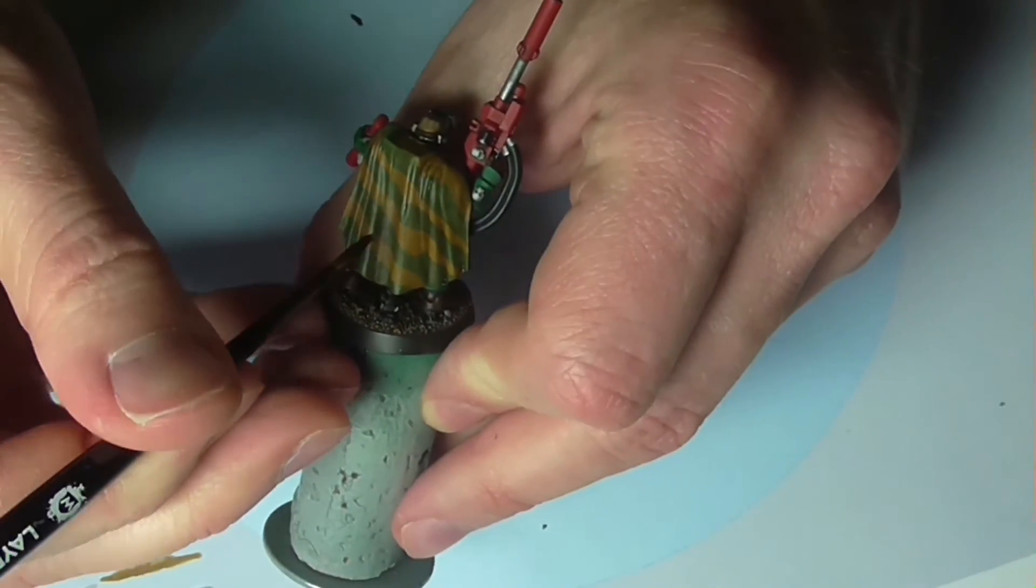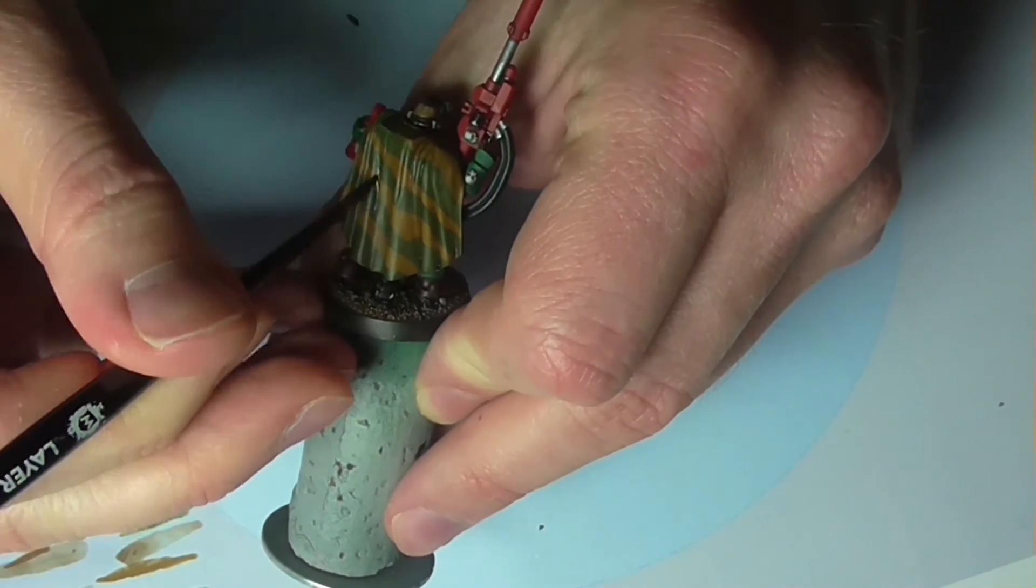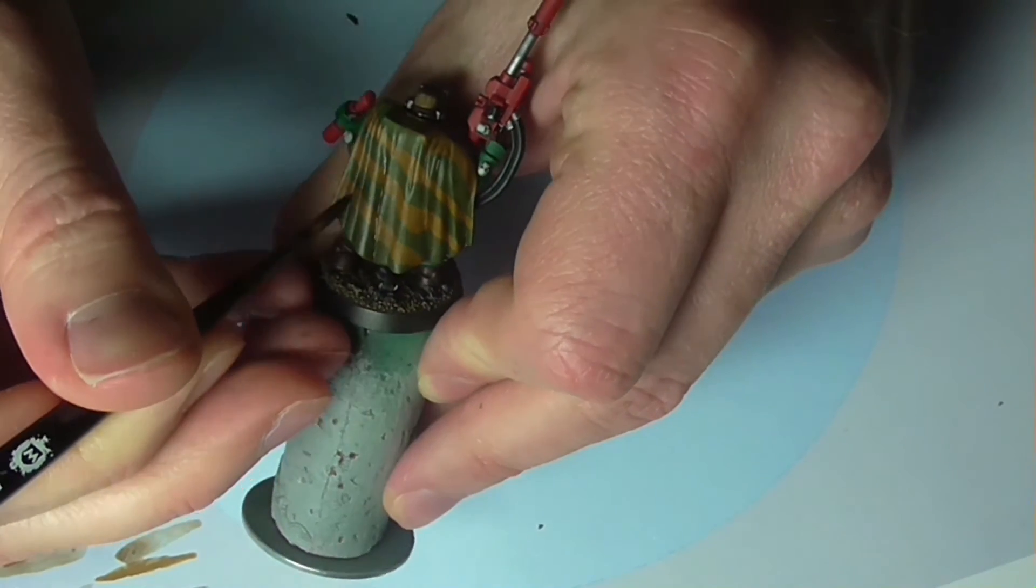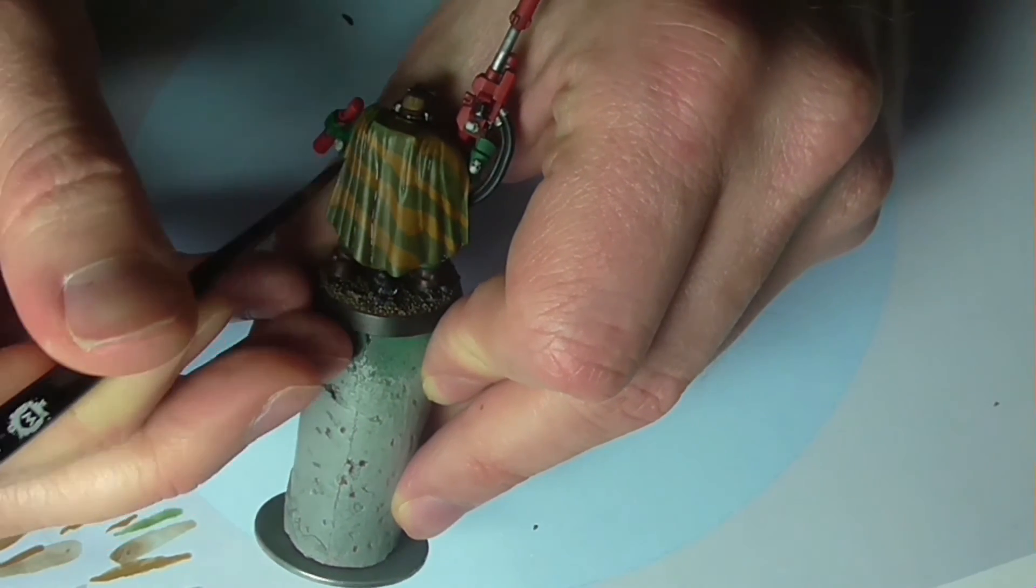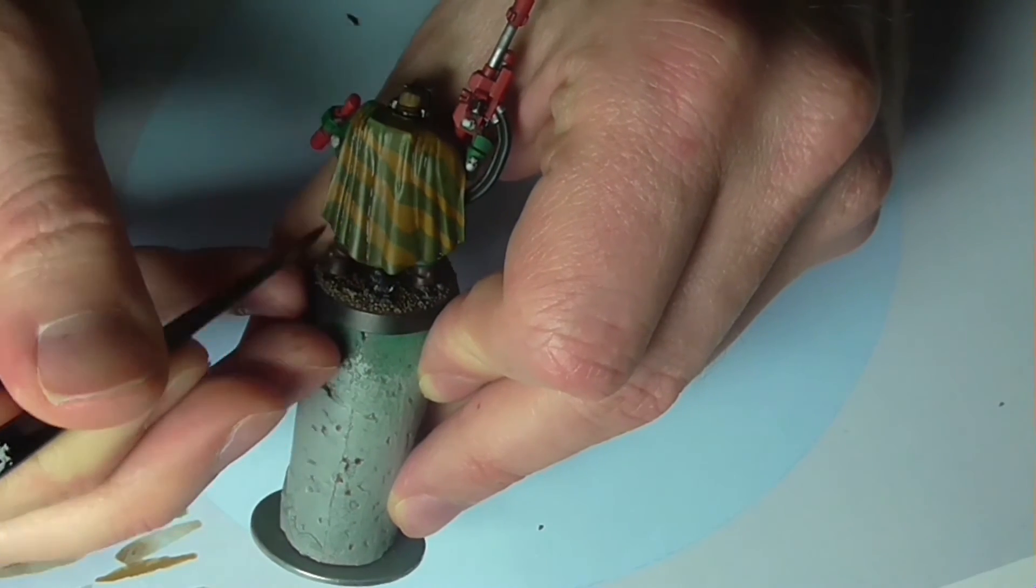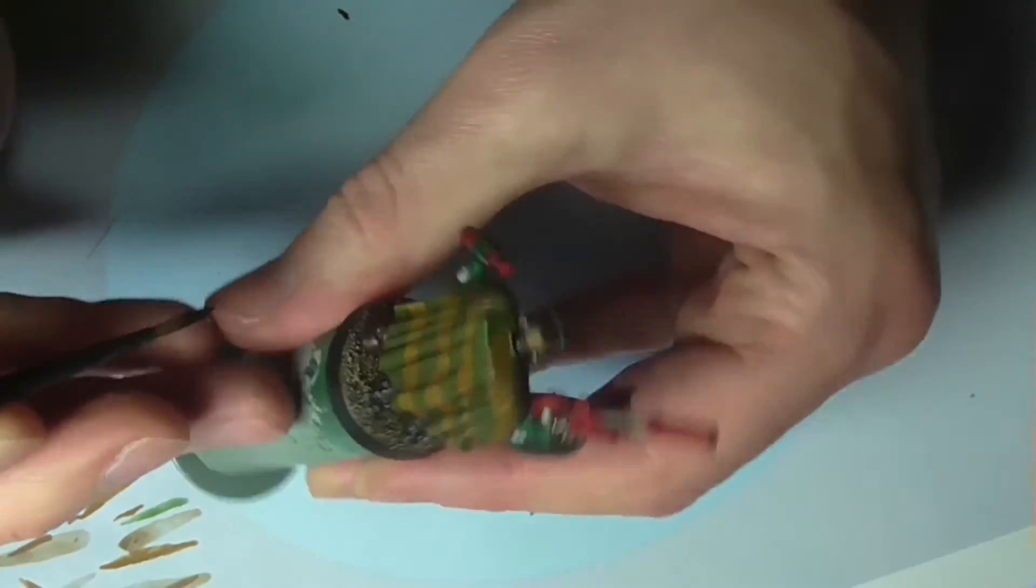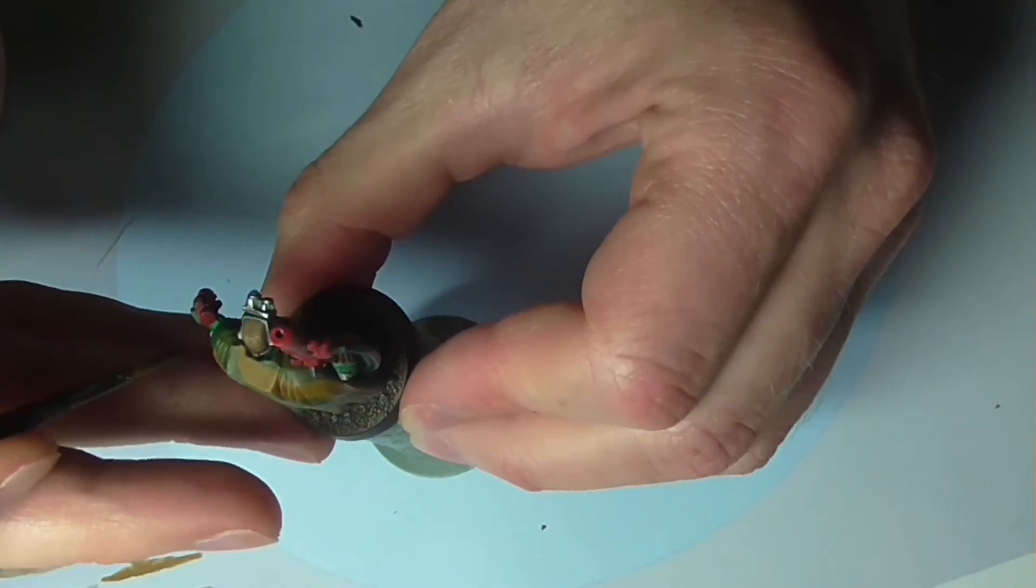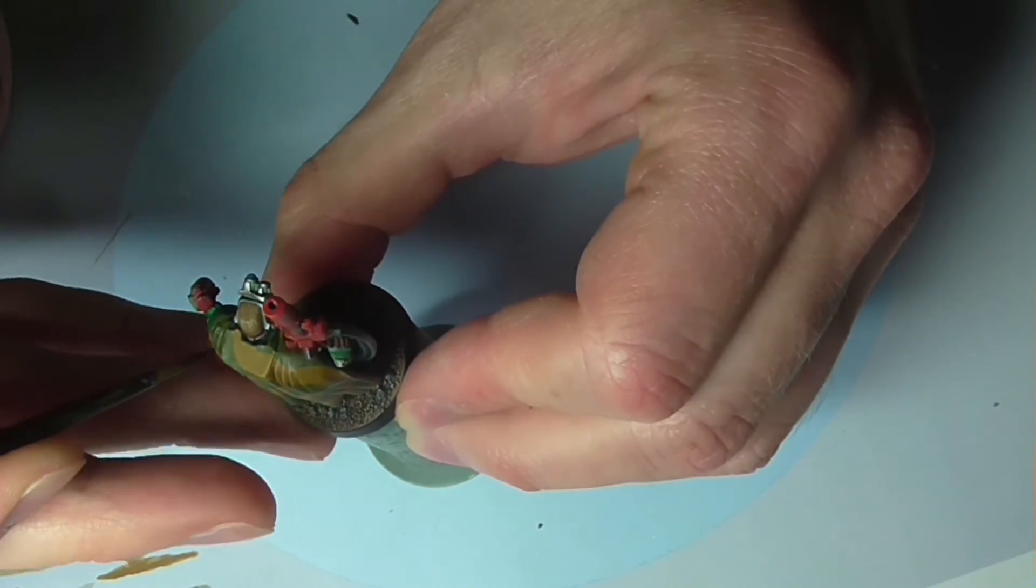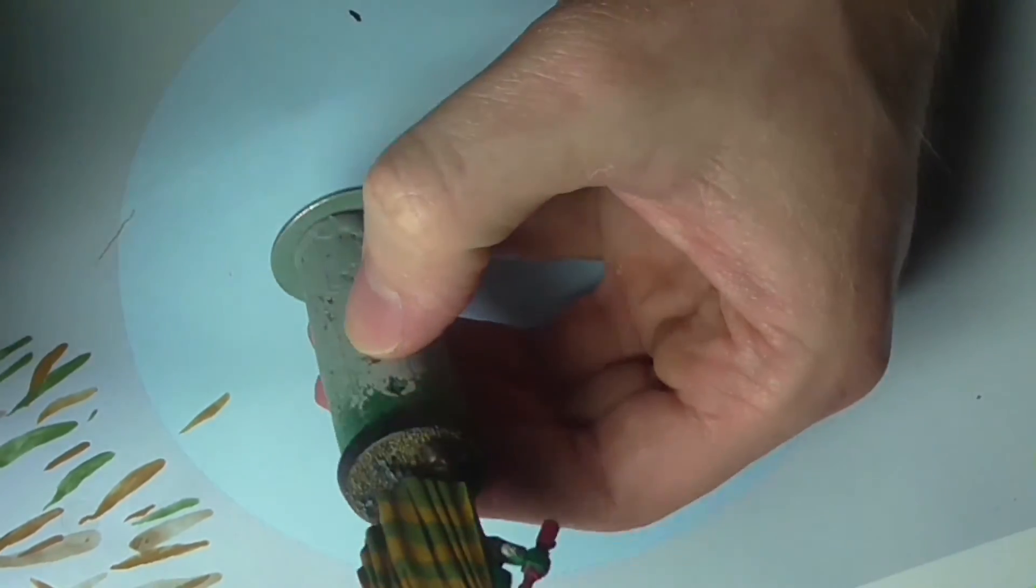Highlighting large flat surfaces is a pain at the best of times, even for reasonably decent tabletop painters. To actually properly shade and highlight a broken up pattern like a camouflage piece of clothing is something of a nightmare if you do it all by hand.